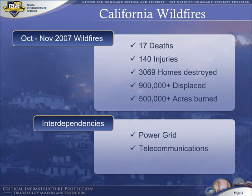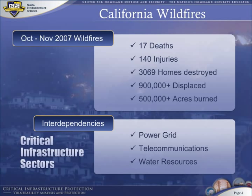Much of the drinking water in Southern California comes from the mountainous area where forests catch on fire and burn everything in sight. Therefore, California wildfires affect several critical infrastructure sectors.